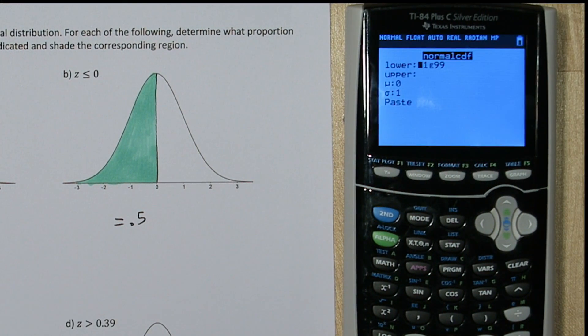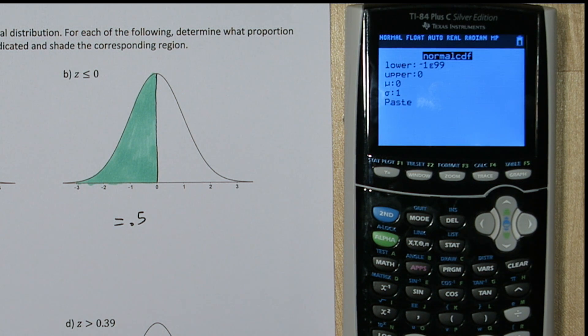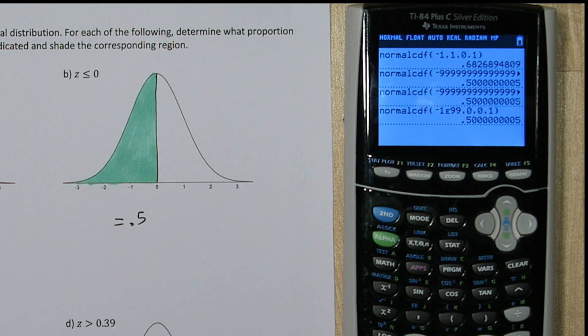When we press second vars again, see this lower limit of negative 1e to the 99? That's the lowest value we could possibly put in there. So let's just leave that. For our upper limit, we'll do 0. And our mean and standard deviation are going to be 0 and 1 again. That last little 5 there is just caused by rounding. So this is a situation where our actual analysis and looking at the graph is more accurate than the calculator.